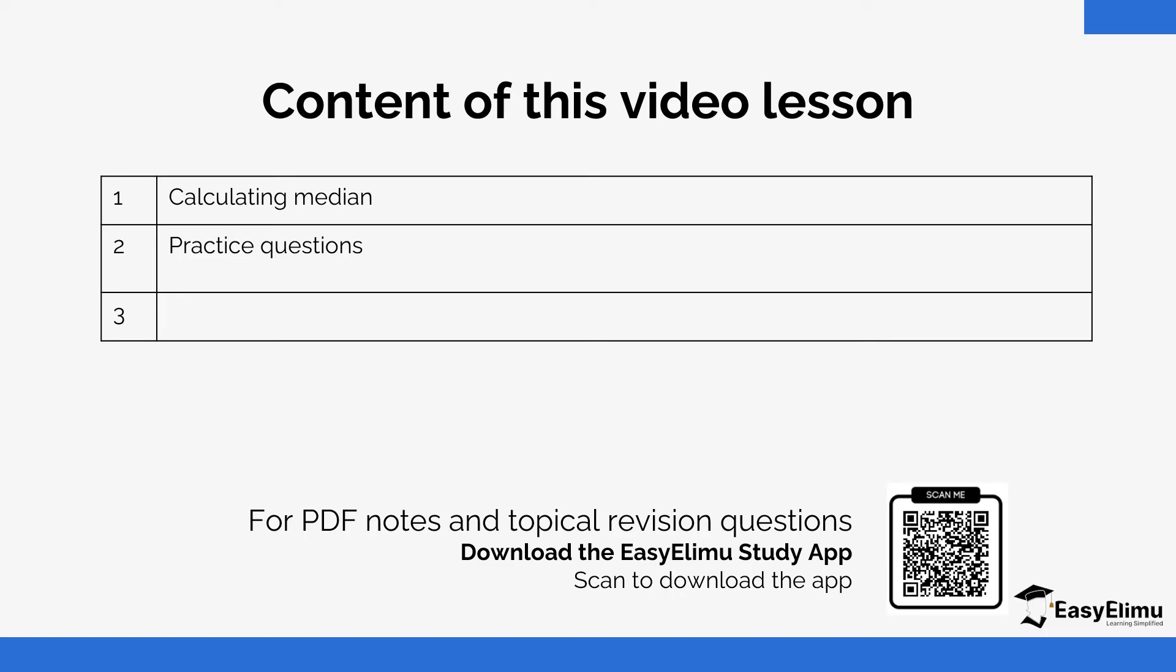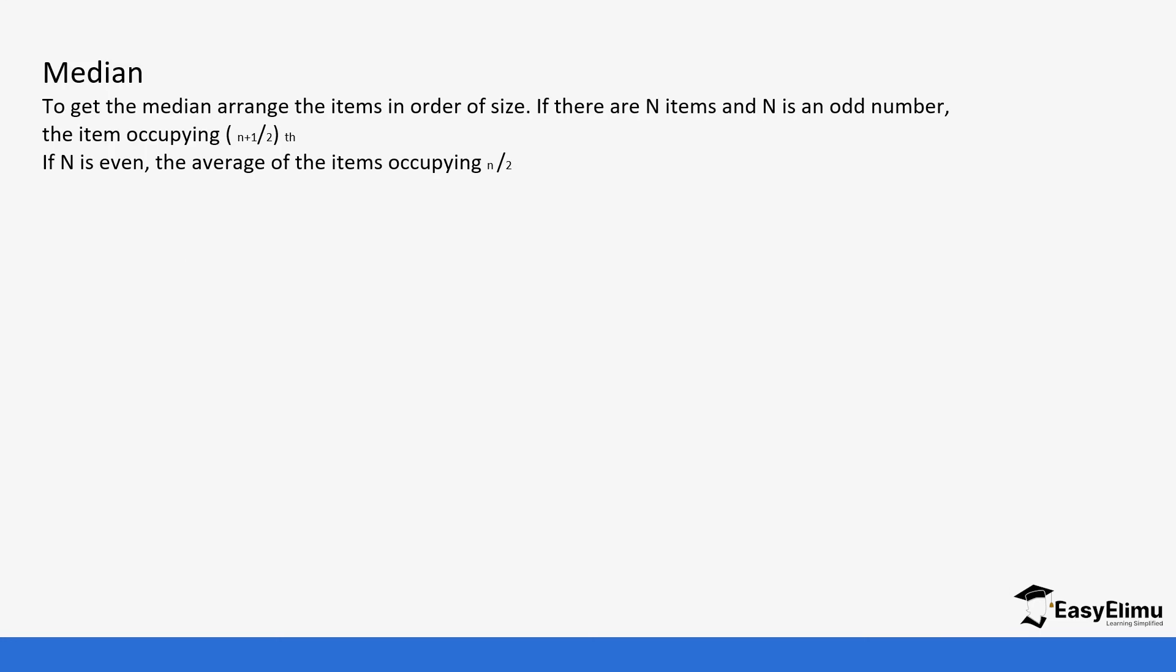To get the median, median is basically the value that is at the center, but you need to arrange your values in order of size from the smallest to the largest. Once you do the arrangement, if it's an odd number of values, the formula is (n+1)/2. If it's even, then we are going to get n/2 and (n+1)/2. We add those two numbers and then divide them by two.